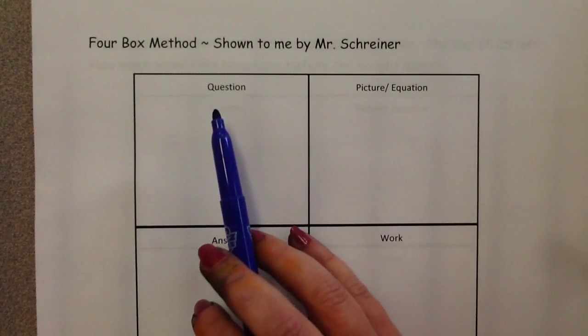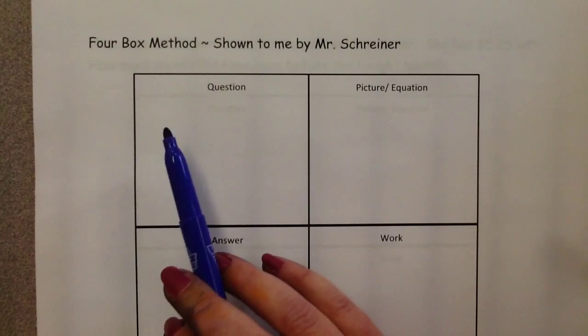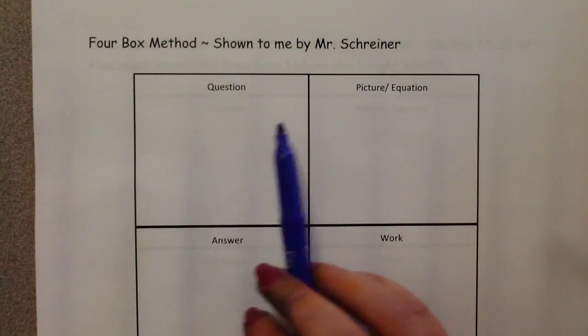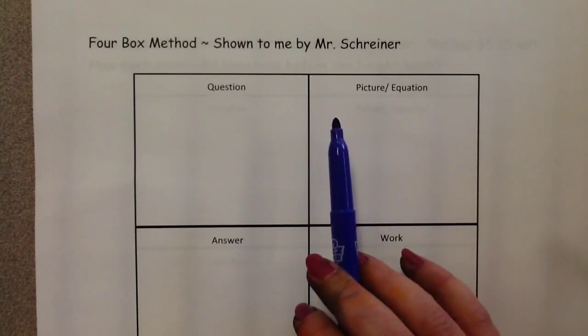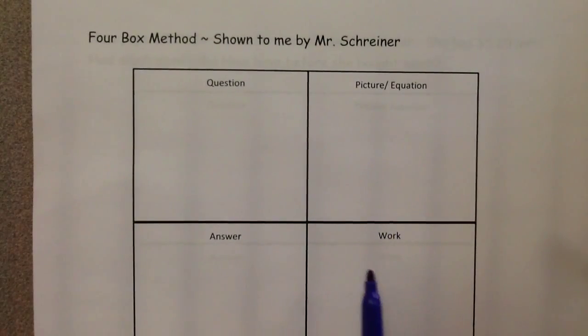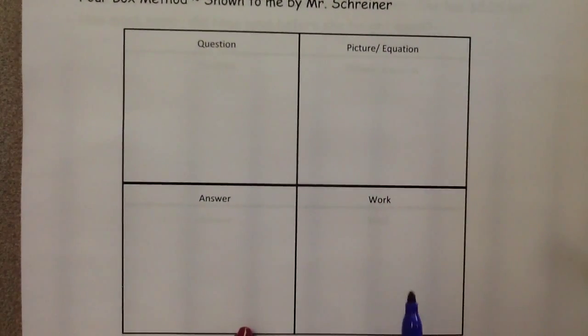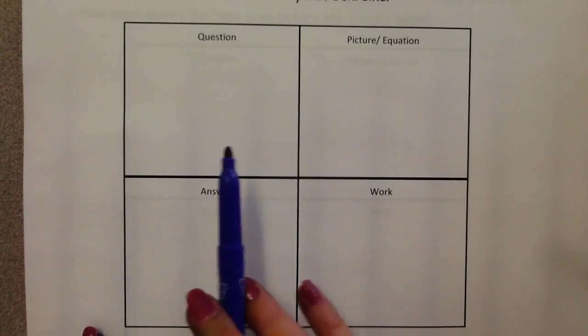The first step is right up here — they write out the basic question, so they can keep focus on exactly what it is they're trying to figure out. Over here in this box is where they might draw a picture, write an equation, and get out the information they know. Then they move down, where they actually do all their work in one nice box. And over here is where they write out the full complete sentence for the answer. The four steps keep the children focused, on track, and help them work it out step by step.